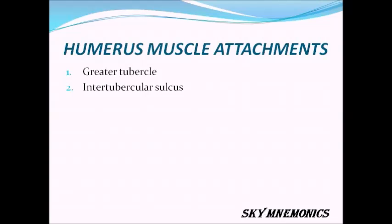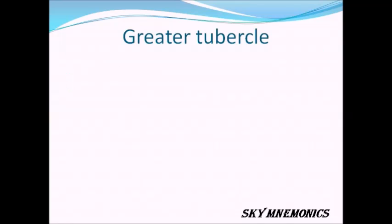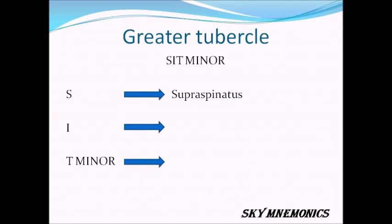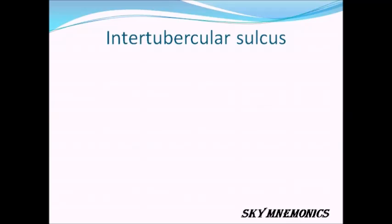It has two parts: attachment in greater tubercle and inter-tubercular sulcus. For the greater tubercle, the mnemonic is SIT minor — S for Supraspinatus, I for Infraspinatus, and T minor for Teres minor.